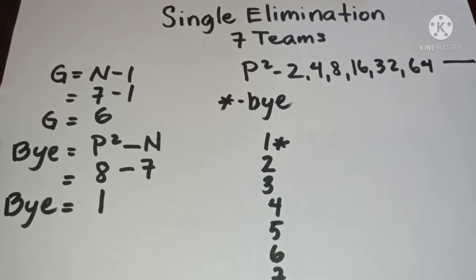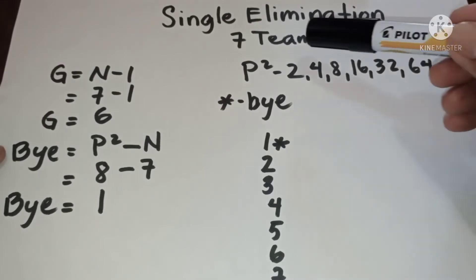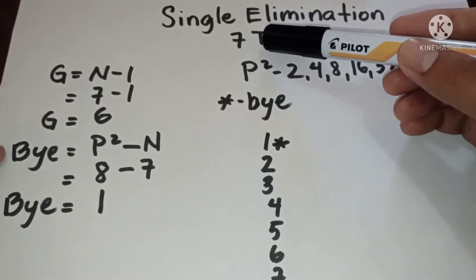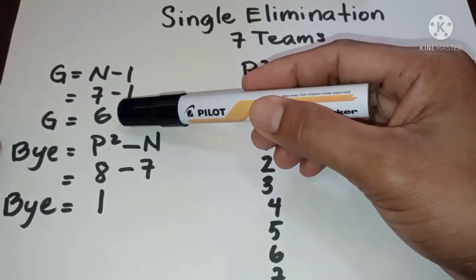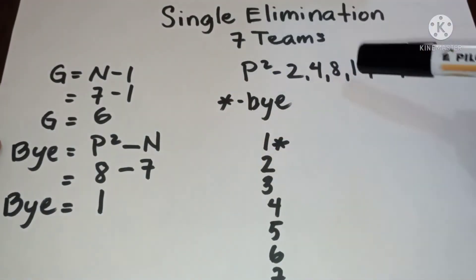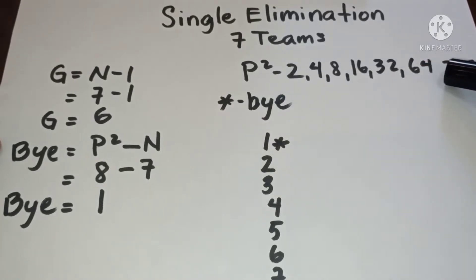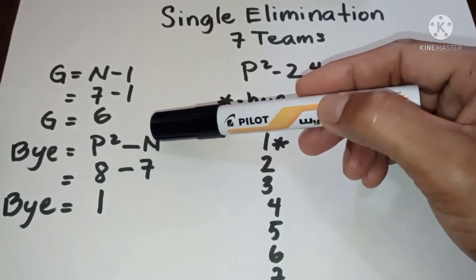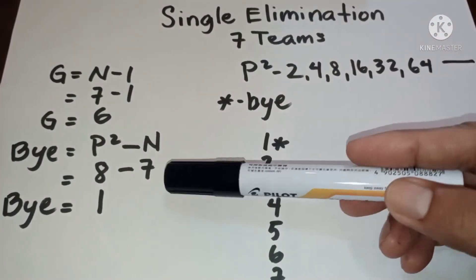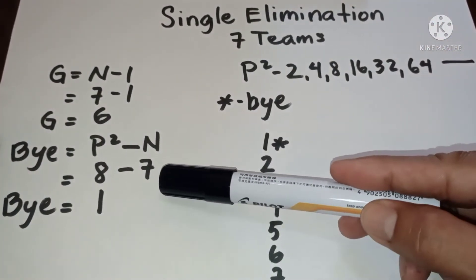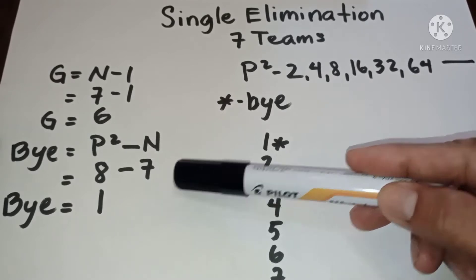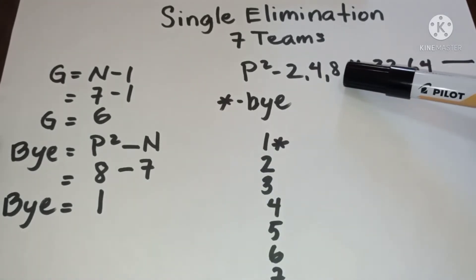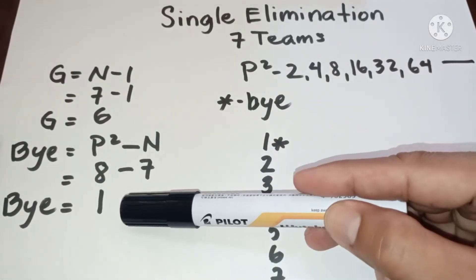Hello everyone. This is single elimination for seven teams. In seven teams we have six games, and since seven is not included in the power of twos, we have a bye. To determine the bye, we use: bye equals the next higher power of 2 minus n. The next higher power of 2 to 7 is 8, so 8 minus 7 equals 1.